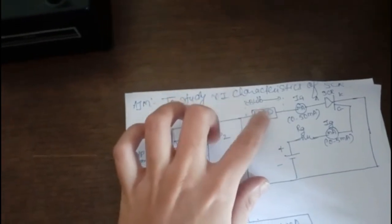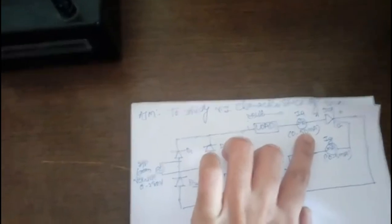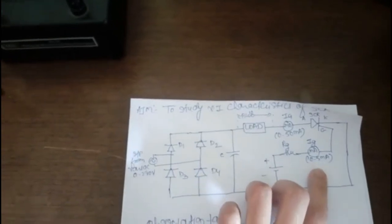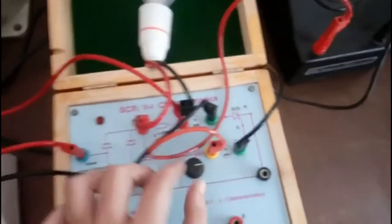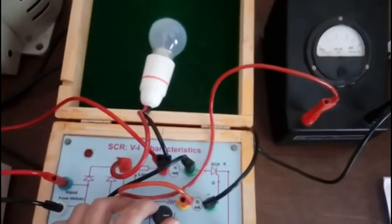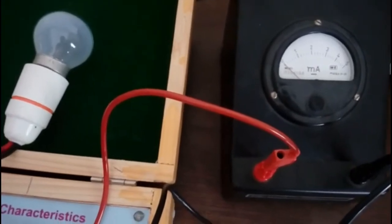Then to it is connected an ammeter in series which measures the anode current of the SCR, and one more ammeter is connected to the gate terminal of the SCR. Here you have the pot. Using it, just set the gate current to 3 milliamps. I will turn on the kit first and the variac.